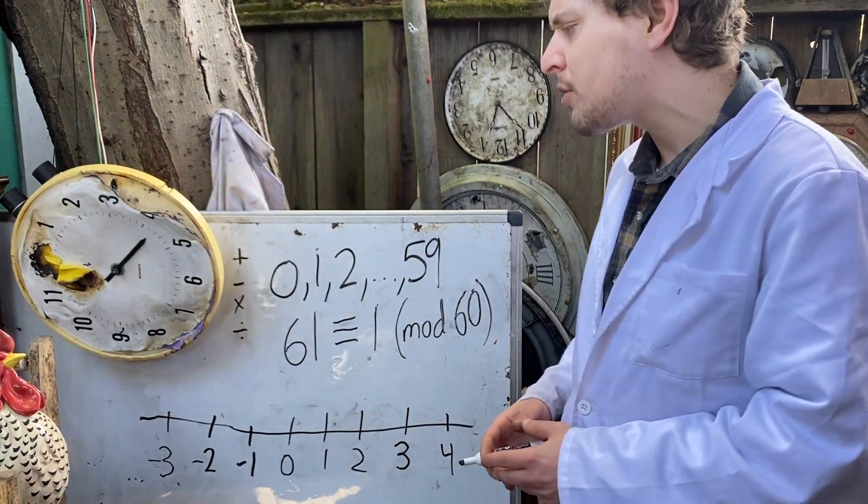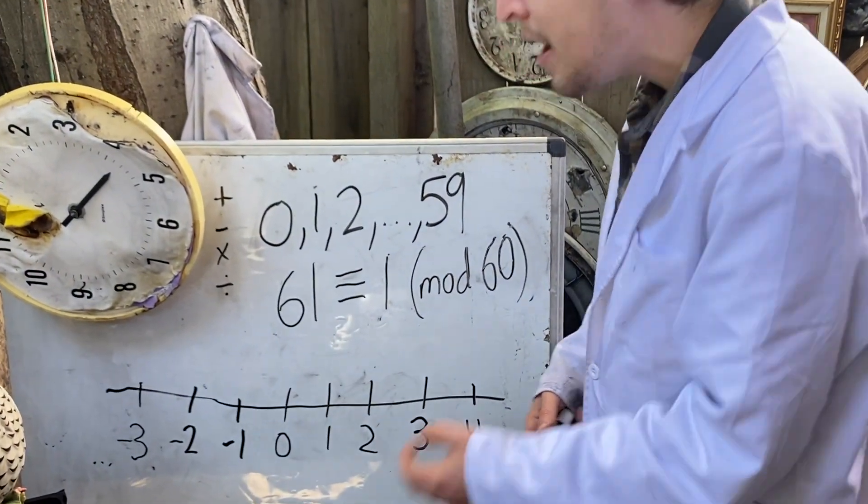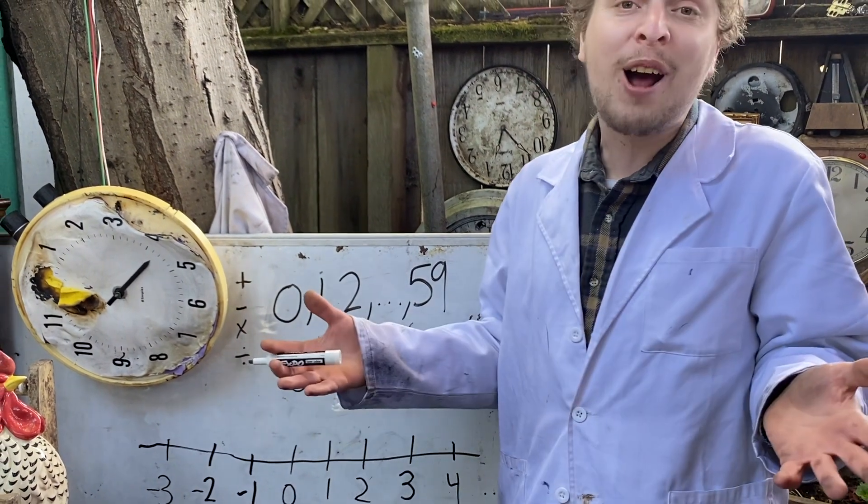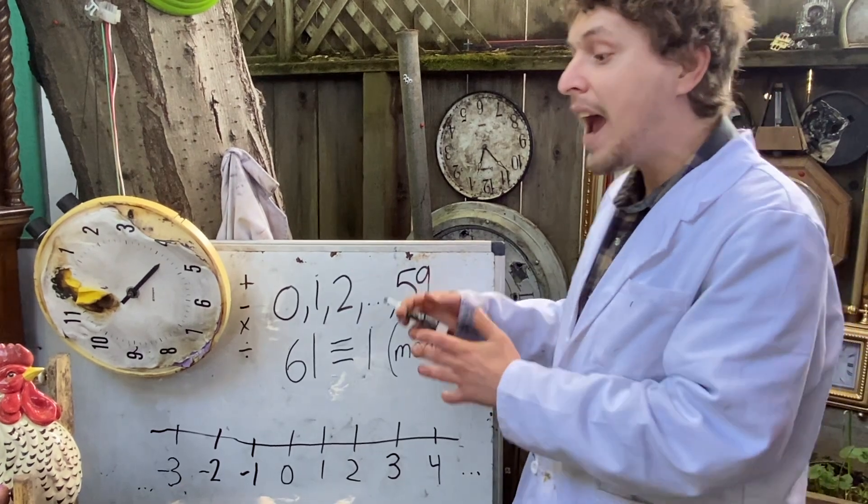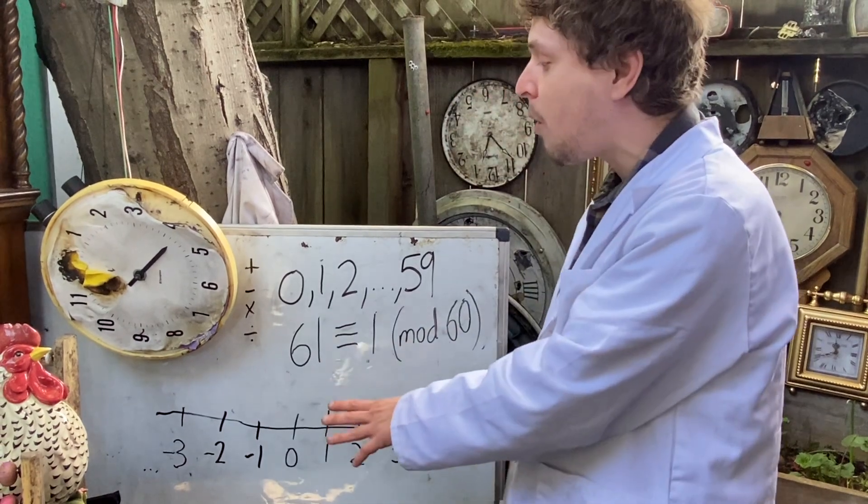But not closed under division because I could do something like 1 divided by 7 and my result isn't another integer. But if I brought out the rational numbers, all of the numbers that can be written as a fraction of two integers, which includes these and lots more, then I would be mostly closed under division.